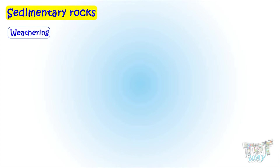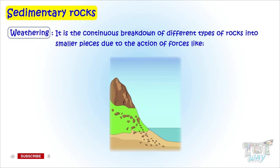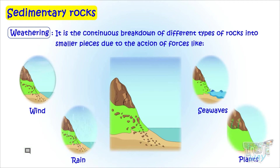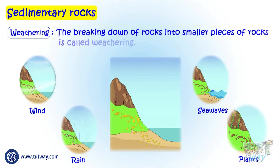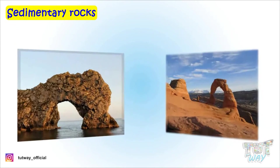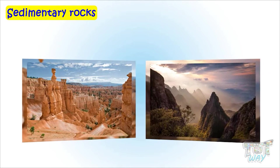Weathering. There is continuous breakdown of different types of rocks into smaller pieces due to the action of forces like wind, rain, sea waves, plants, animals, and changes in temperature and pressure. This breaking down of rocks into smaller pieces is called weathering. These are some beautiful shapes of rocks formed by continuous weathering over the years.